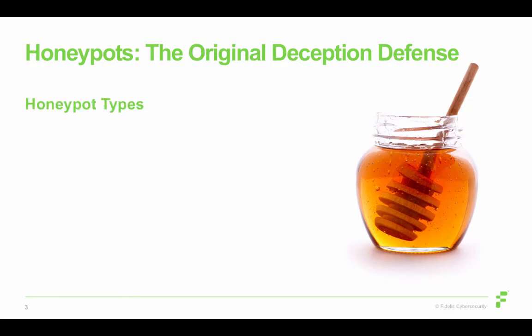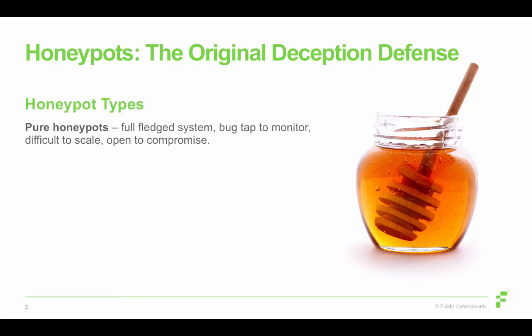There are different types of honeypots. The pure honeypot is a full-fledged system with a full operating system, bug tap to monitor, and is kind of difficult to scale — used in very specific instances. Since they're focused on containment, there's a desire to attract the attacker, learn the attacker's methods, and even have the attacker install their malware tools and techniques. They're open to compromise for that, so they're something you want to watch closely to get what you want and then shut out the attacker.